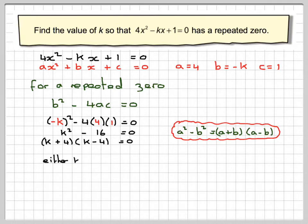So either k plus 4 equals 0, which gives that k equals minus 4, or k minus 4 equals 0, which gives that k equals 4. So the solution is k equals plus or minus 4.